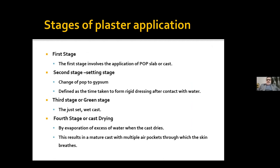There are four stages of plaster application. The first stage involves application of the POP slab or cast. Second stage, also known as the setting stage, is the change of POP to gypsum — defined as the time taken to form rigid dressing after contact with water. Third stage, or green stage, is the just-set wet cast. The fourth stage, cast drying, is evaporation of excess water, resulting in a mature cast with multiple air pockets through which the skin breathes.